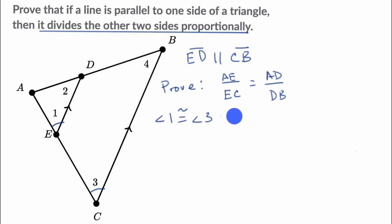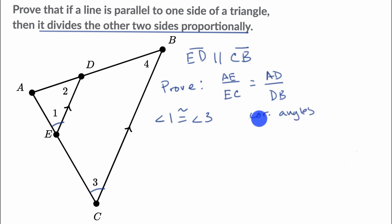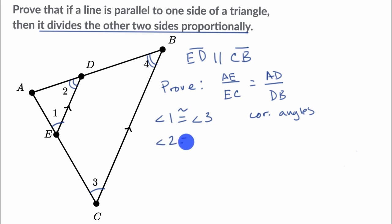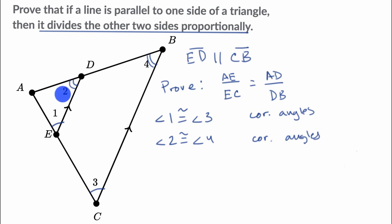The reason is that they are corresponding angles — corresponding angles where a transversal intersects two parallel lines. We also know that angle two is congruent to angle four for the same reason — corresponding angles, this time with a different transversal intersecting the two parallel lines.